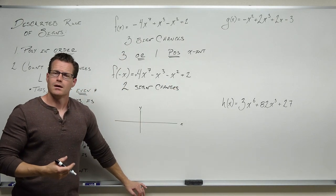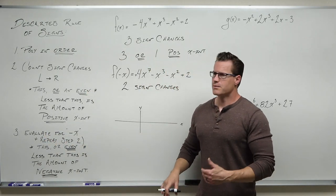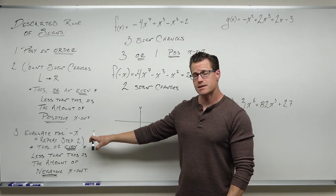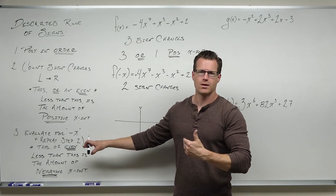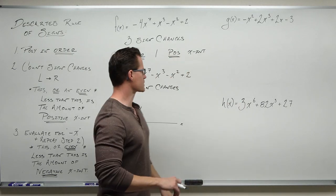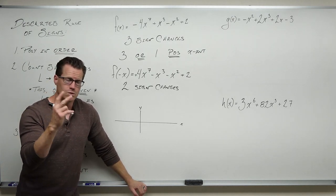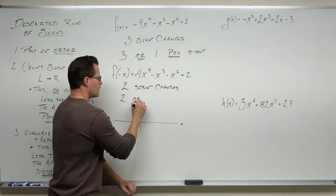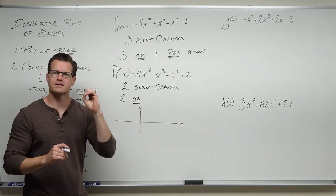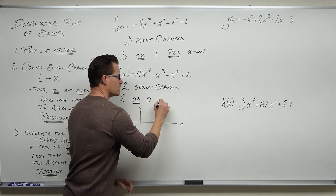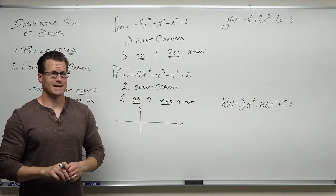What does that mean? Because we evaluated for negative x and counted from left to right — there are two sign changes. This number represents the number of negative x-intercepts, or an even number less than that. So: two sign changes after evaluating negative x means I will have either two, or start subtracting two to get zero. I will have either two or zero negative x-intercepts. Two minus two is zero. Two or zero negative x-intercepts — that's all we can possibly have.